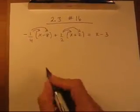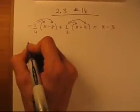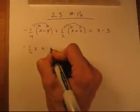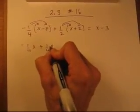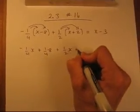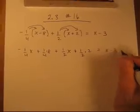It's just nicer to look at and it's more clear who gets the LCD multiplied onto it. So distributing, we get minus 1/4 x, minus minus is plus 1/4 times 8 plus 1/2 x plus 1/2 times 2 equals x take away 3.